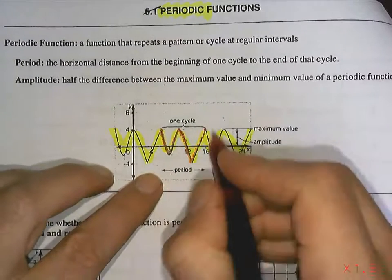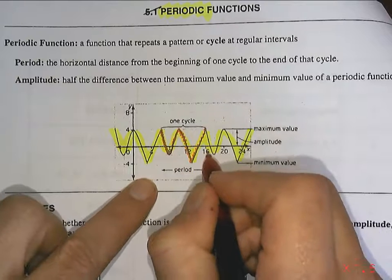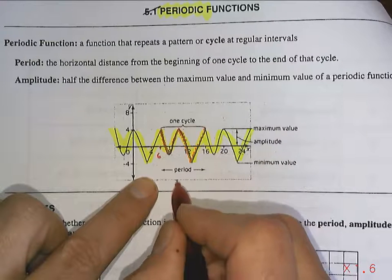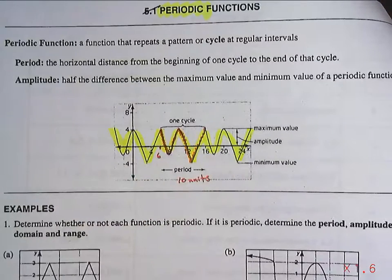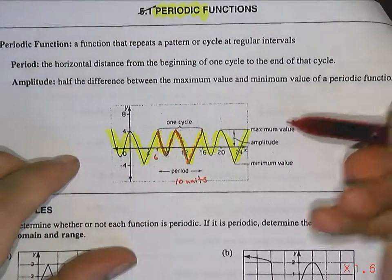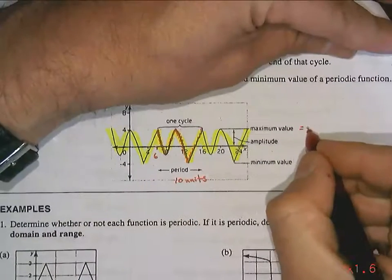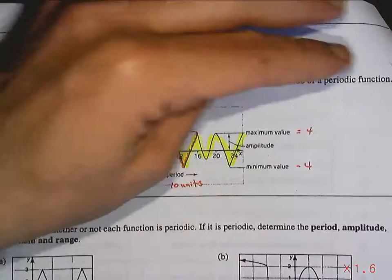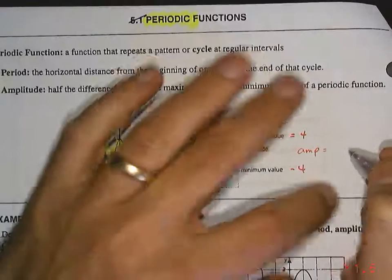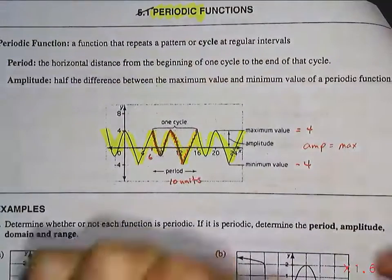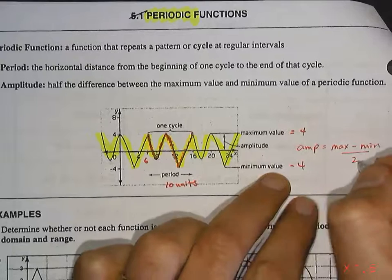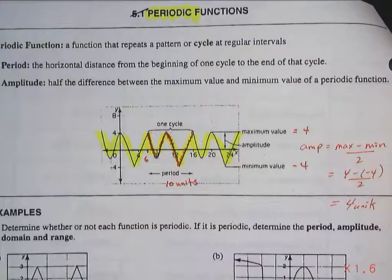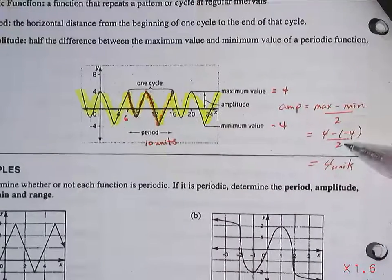This length is going to be the period from this 16 up to, let's see, this is 16, 12, 8. So this would be 6, and that's 16. So this period, this distance, is going to be 10 units. This is one complete cycle. Its maximum value is the highest value it hits. So its maximum value in this case is 4. Its minimum value in this case is negative 4. Its amplitude is given by the max minus the min divided by 2. So it's going to be 4 minus negative 4 over 2 equals 4 units.